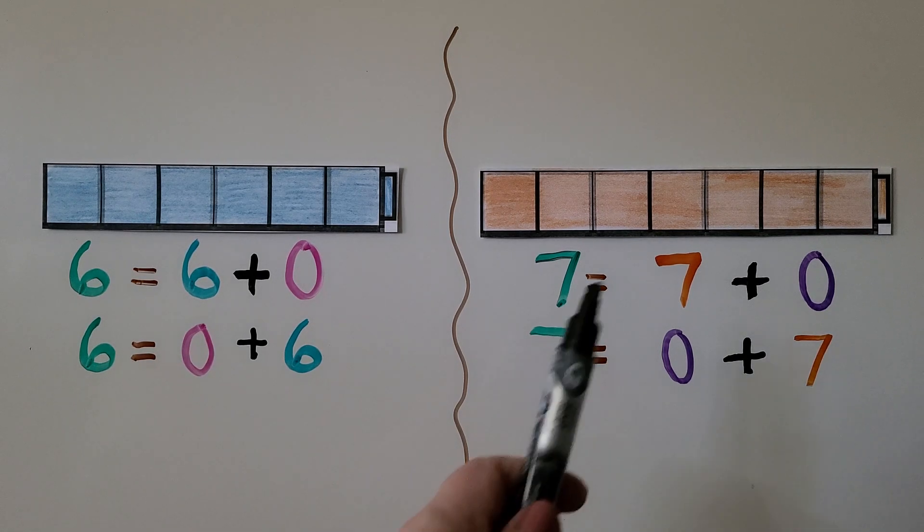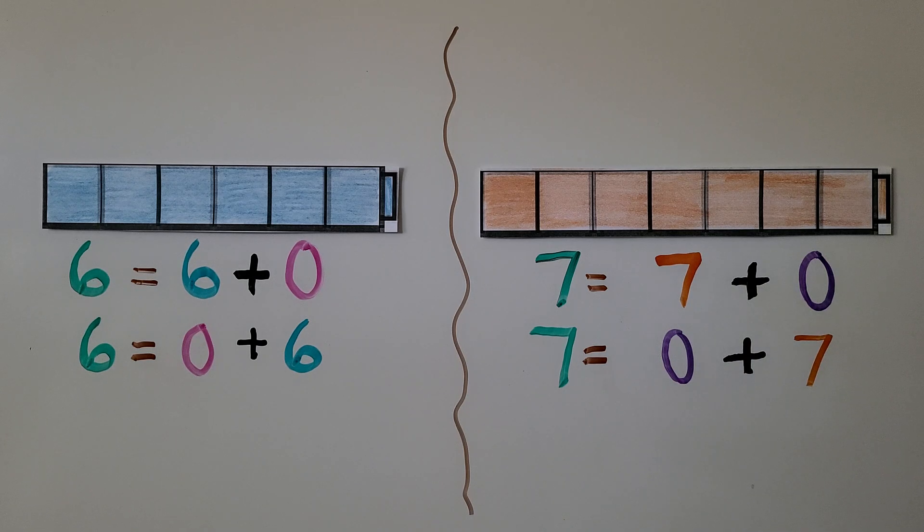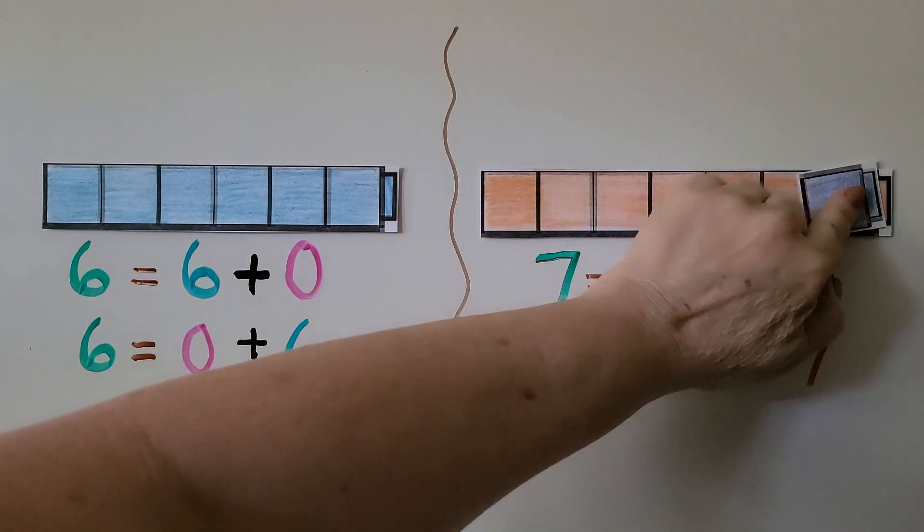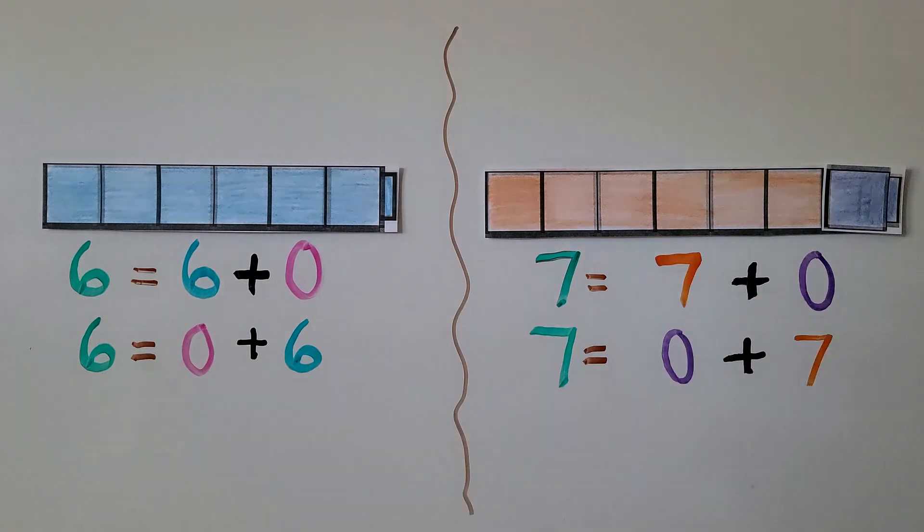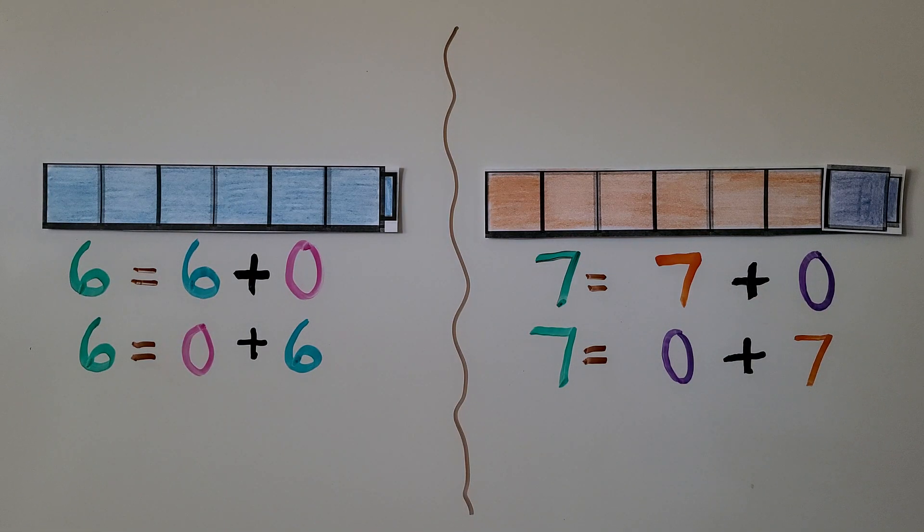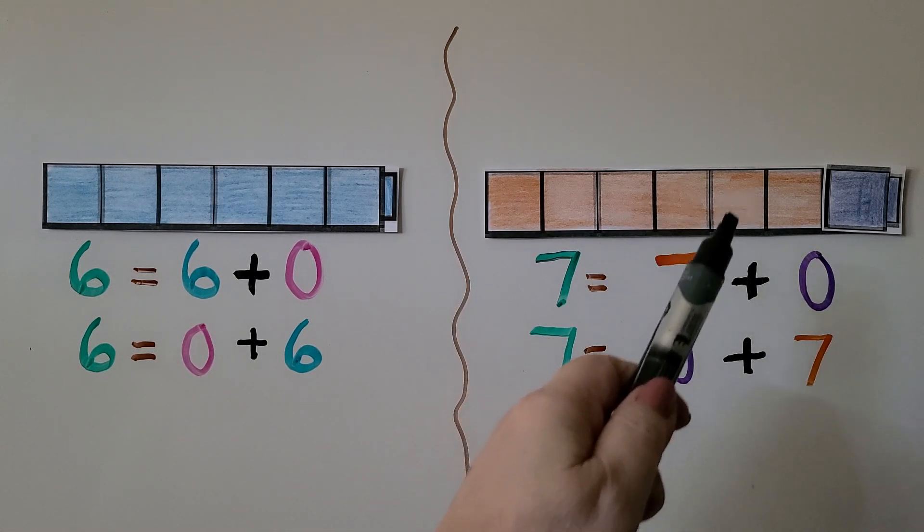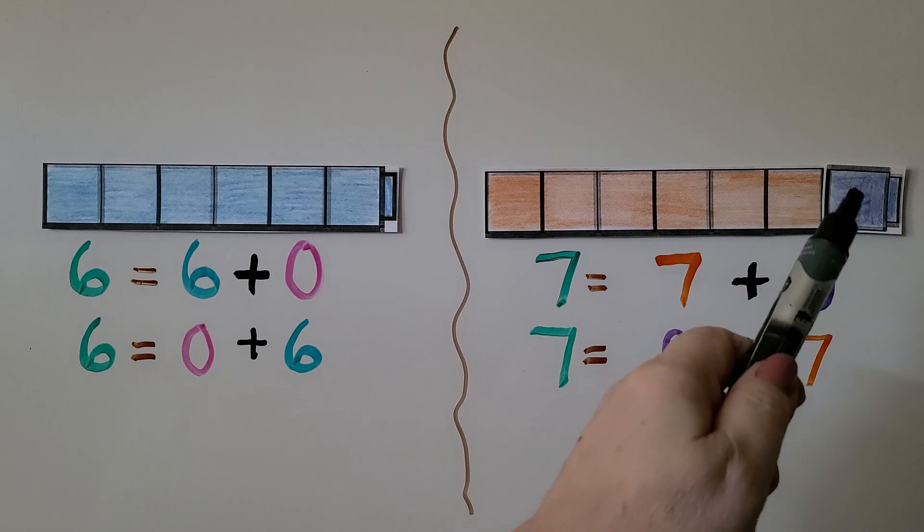What would happen to this cube train if one of the cubes was blue? What if we made one of these cubes blue? Are there still 7 cubes in the cube train? Let's count and check: 1, 2, 3, 4, 5, 6, 7.